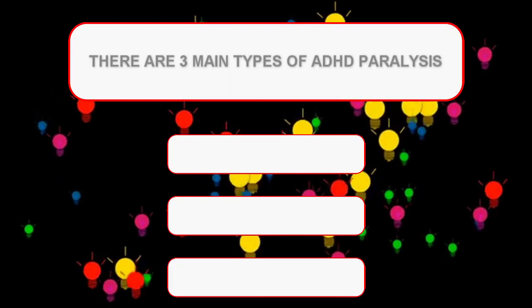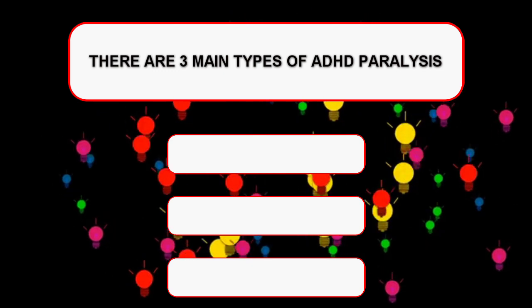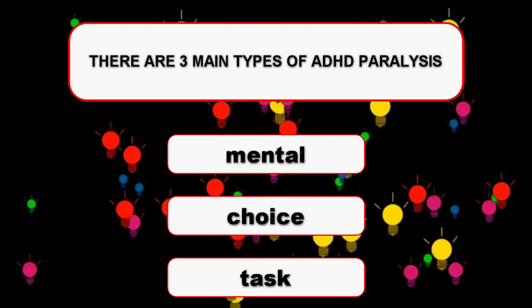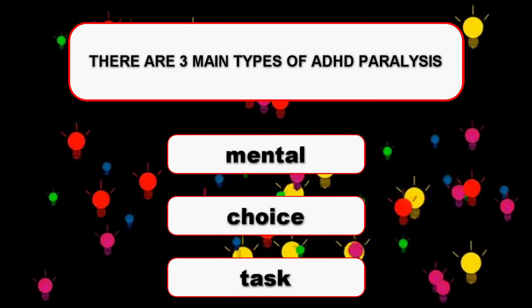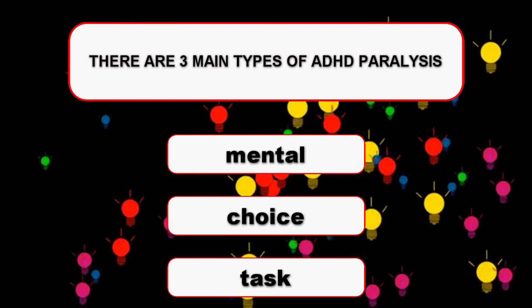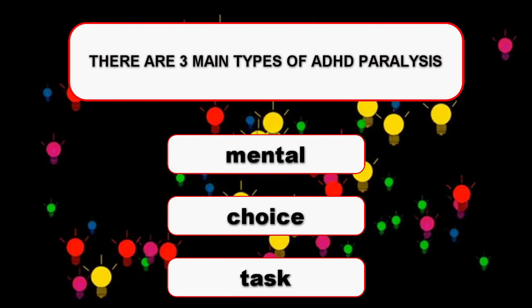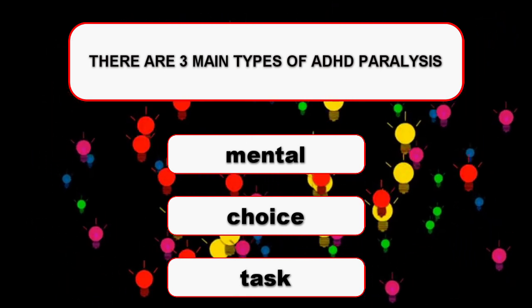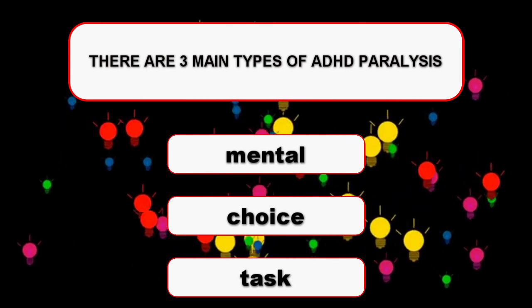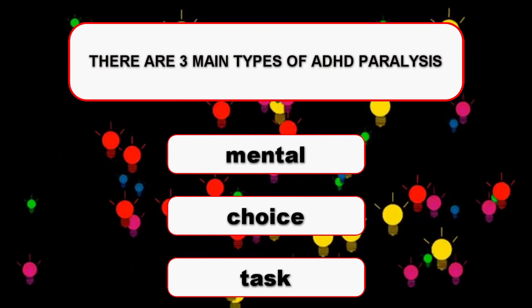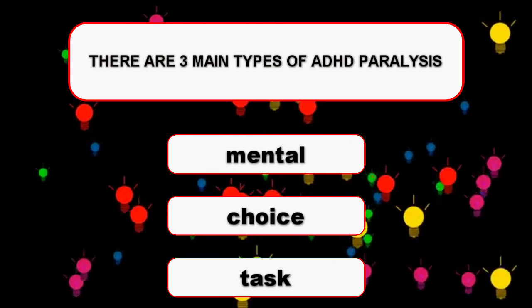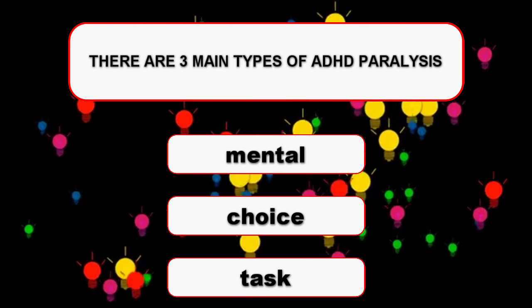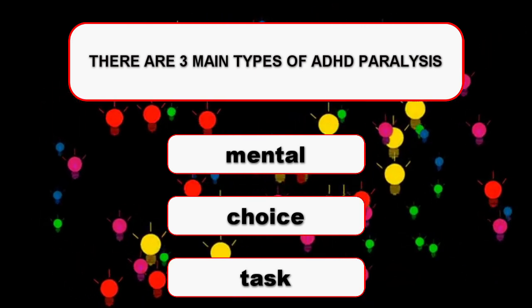There are three main types of ADHD paralysis: mental, choice, and task. It may be helpful to understand which type affects you at any given moment so you can figure out the root cause and find the best solution to unfreeze yourself during learning.